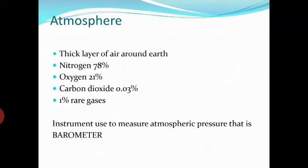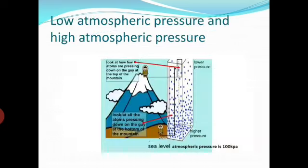When air exerts pressure on Earth, it is called atmospheric pressure. Atmospheric pressure is measured by an instrument called a barometer, and it was invented by Torricelli in 1643. The barometer is used to measure atmospheric pressure on Earth. At some places the atmospheric pressure is low and at some places it is high.